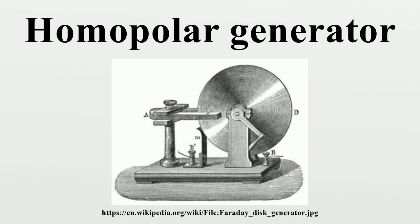A drum-type homopolar generator has a magnetic field that radiates radially from the center of the drum and induces voltage down the length of the drum. A conducting drum spun in the field of a loudspeaker-type magnet — with one pole in the center of the drum and the other pole surrounding the drum — could use conducting ball bearings at the top and bottom of the drum to pick up the generated current.